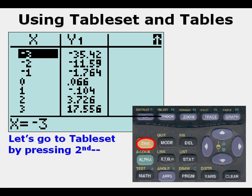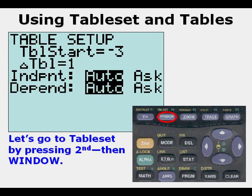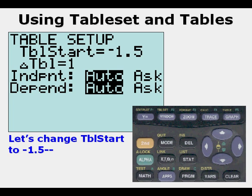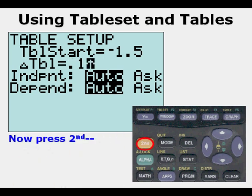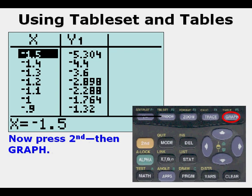Press second window and we're going to change table start to negative 1.5 and change delta table—that triangle table—to 0.1. When we do that, we can go to second graph.